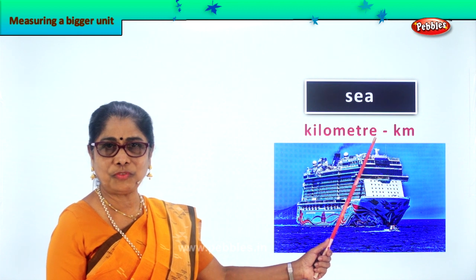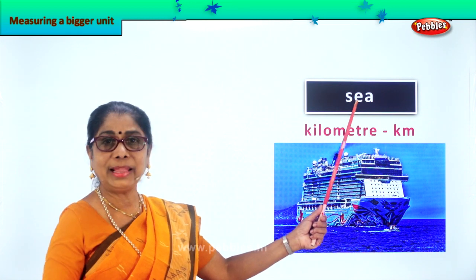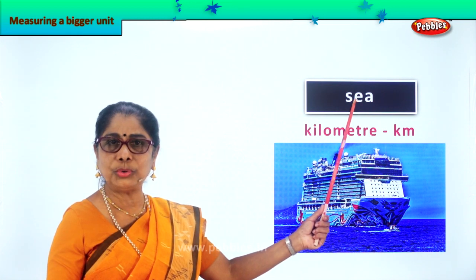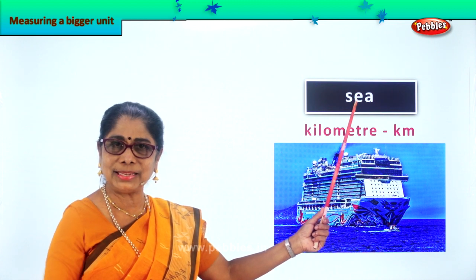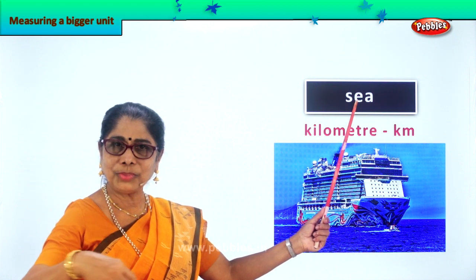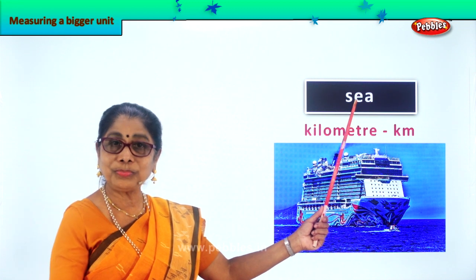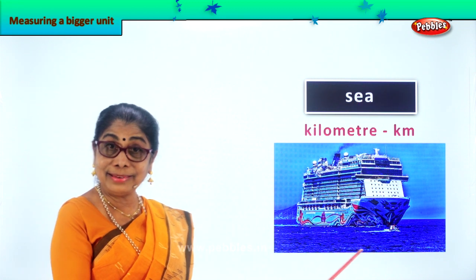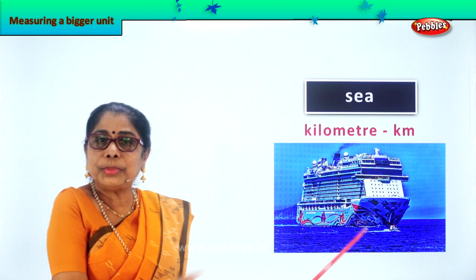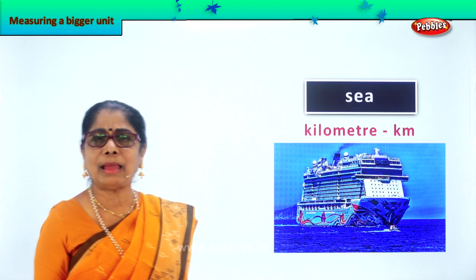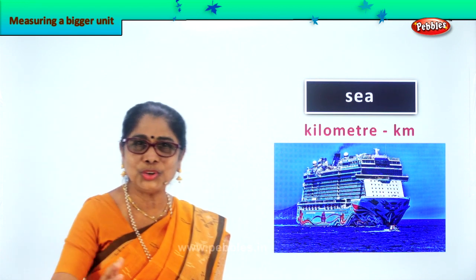What is the short form of kilometer? Km. So anything that goes on the sea — yachts, small boats, ferry boats, big ships — all distances are calculated in kilometers.